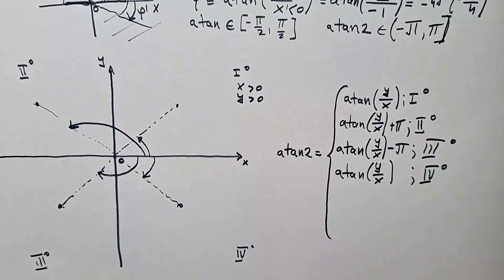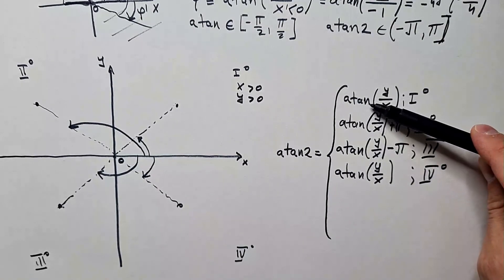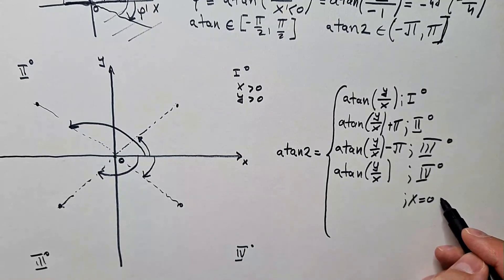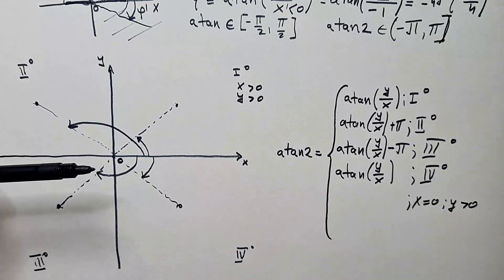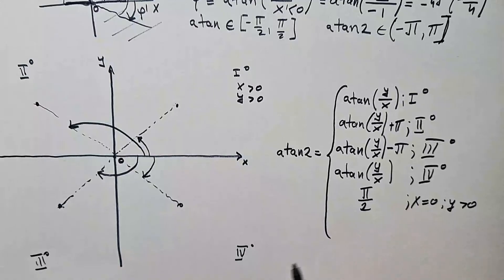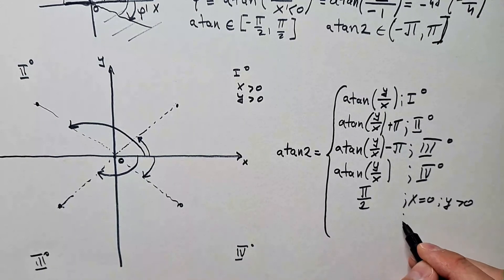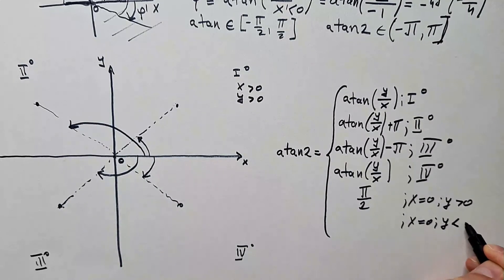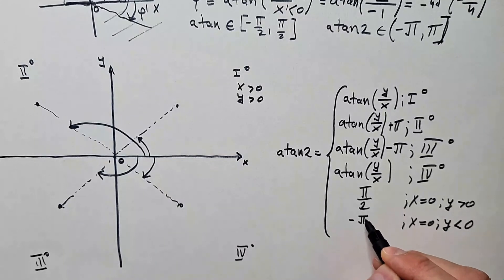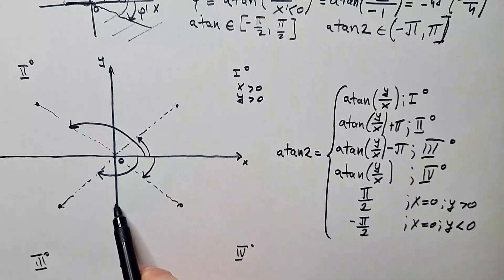Let's see some special cases. What happens if x is 0? If x is 0, then in the formulation of arctangent we would divide by 0 and we cannot do that. However, if x equals 0 and y is positive — meaning we are on the positive y-axis — then by definition arctangent 2 is pi over 2, which is 90 degrees. Similarly, when x is 0 and y is negative, on the negative y-axis, arctangent 2 will be minus pi over 2. It's not true that only Chuck Norris can divide by 0 — arctangent 2 can also divide by 0.